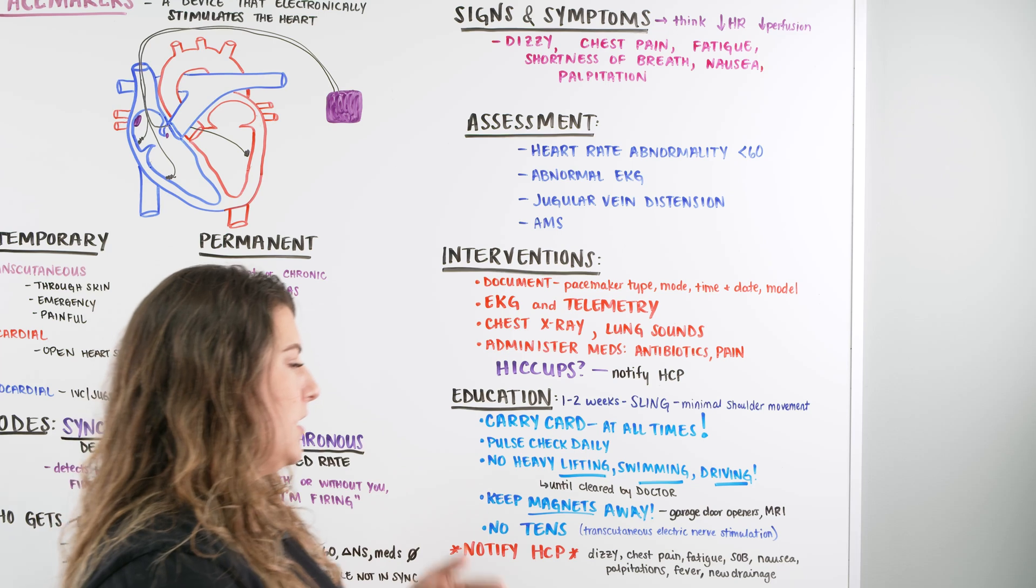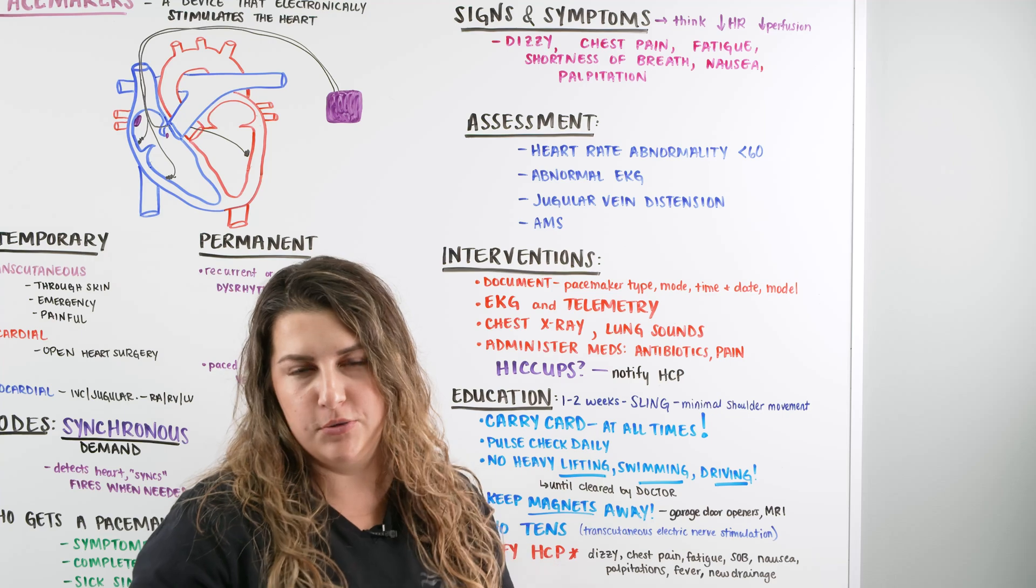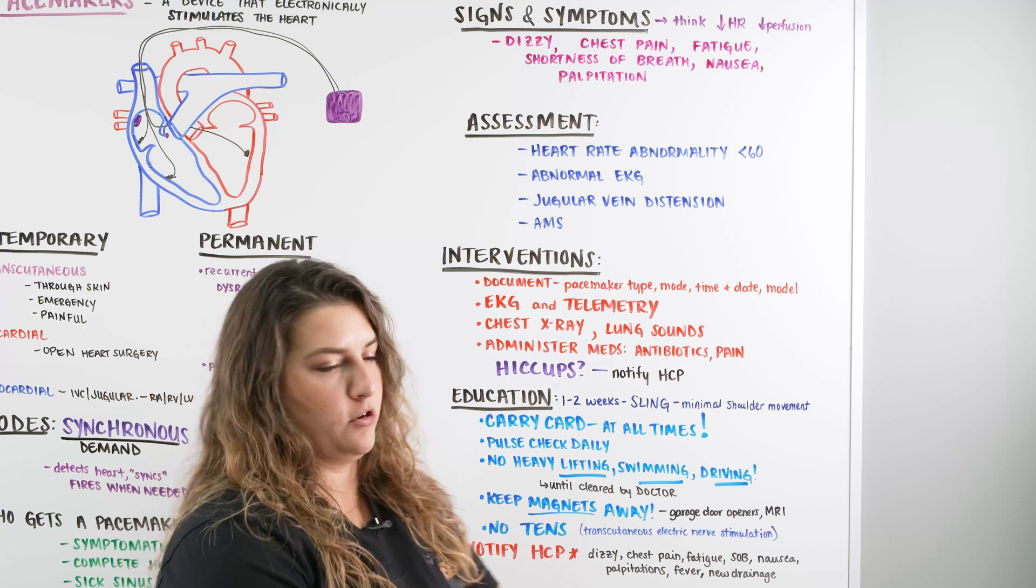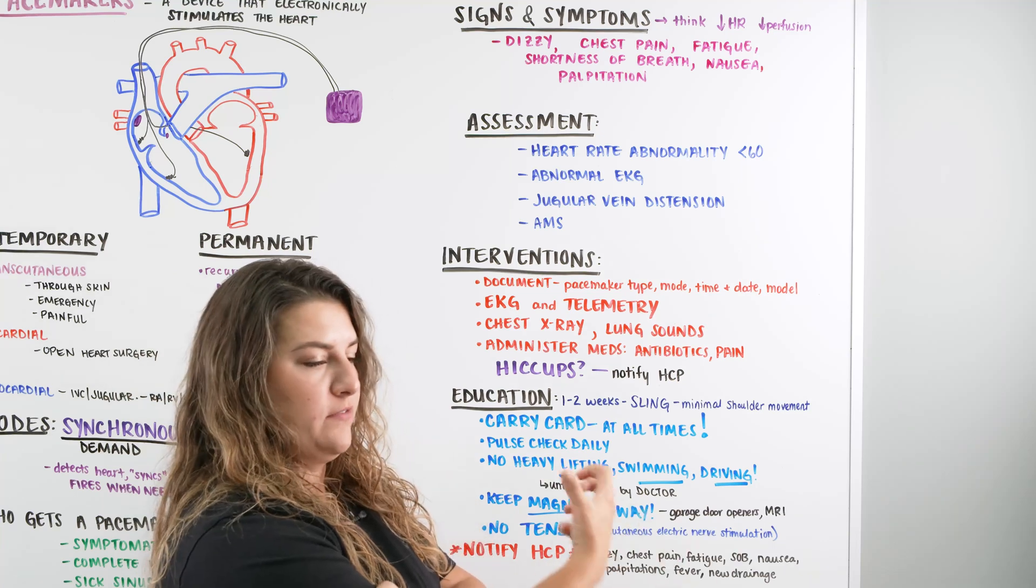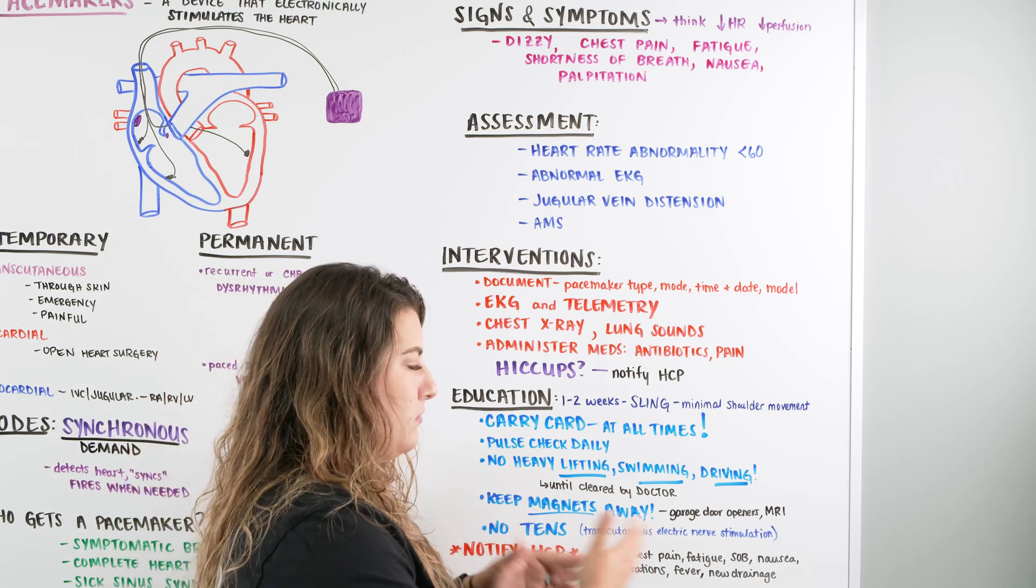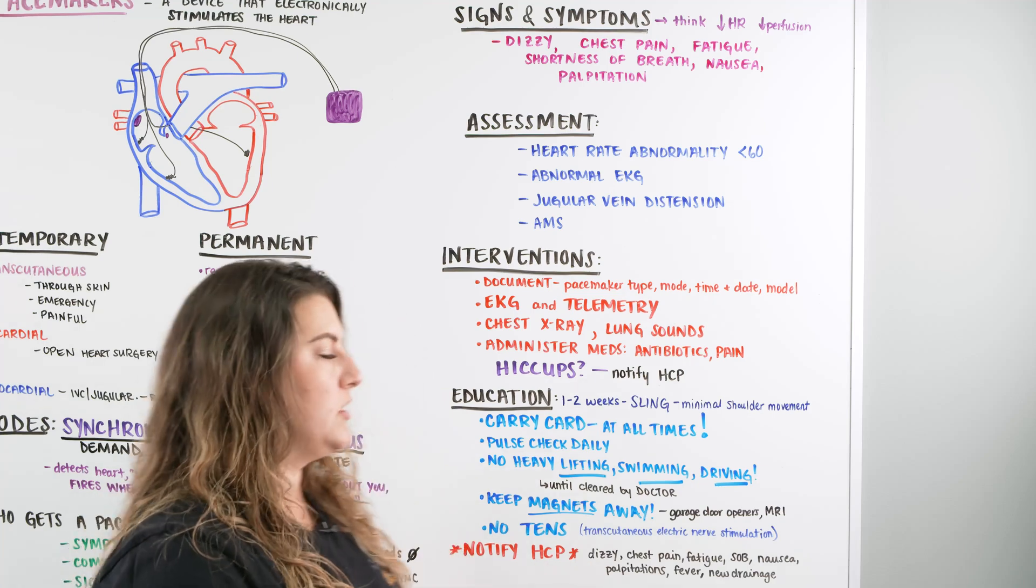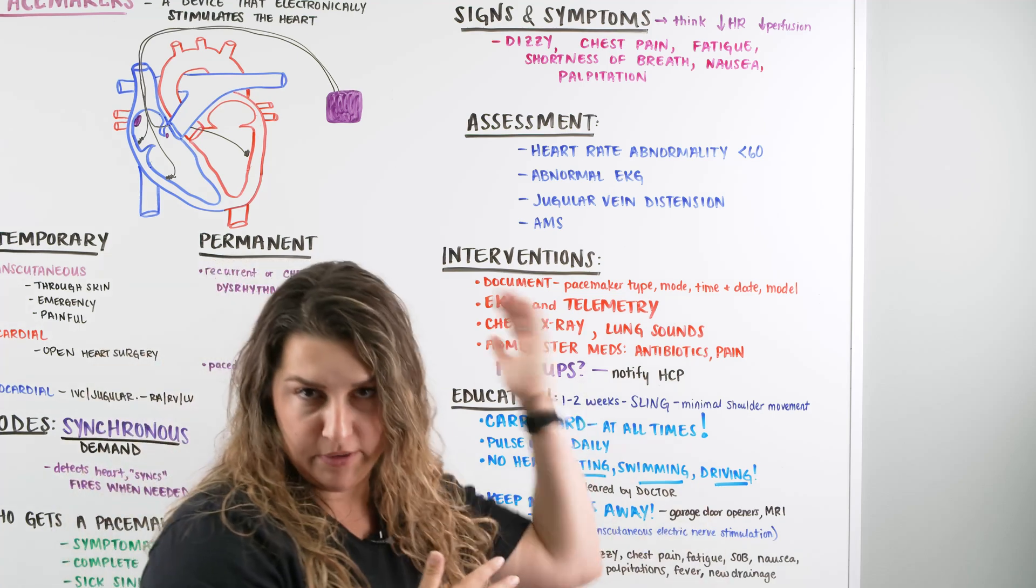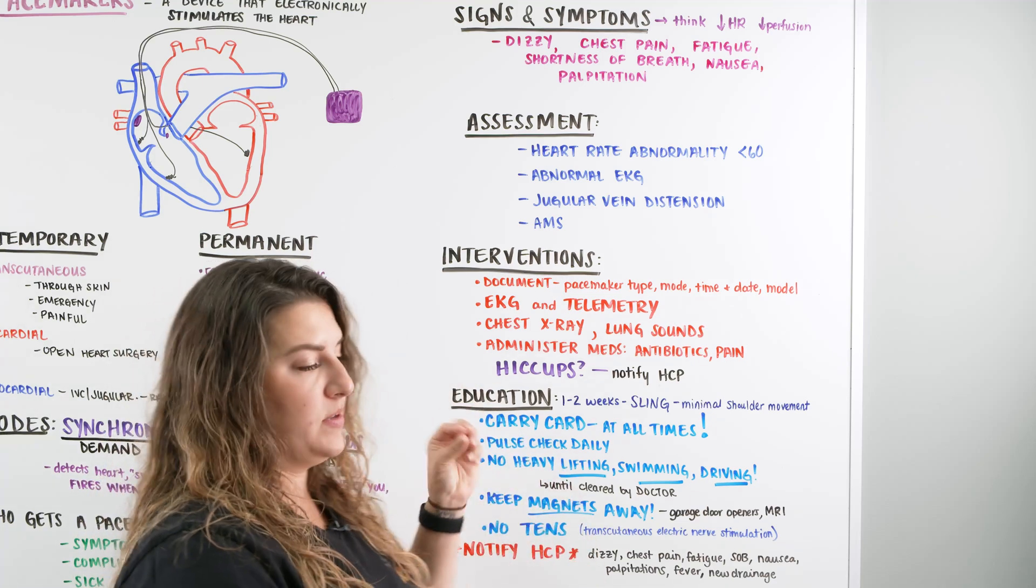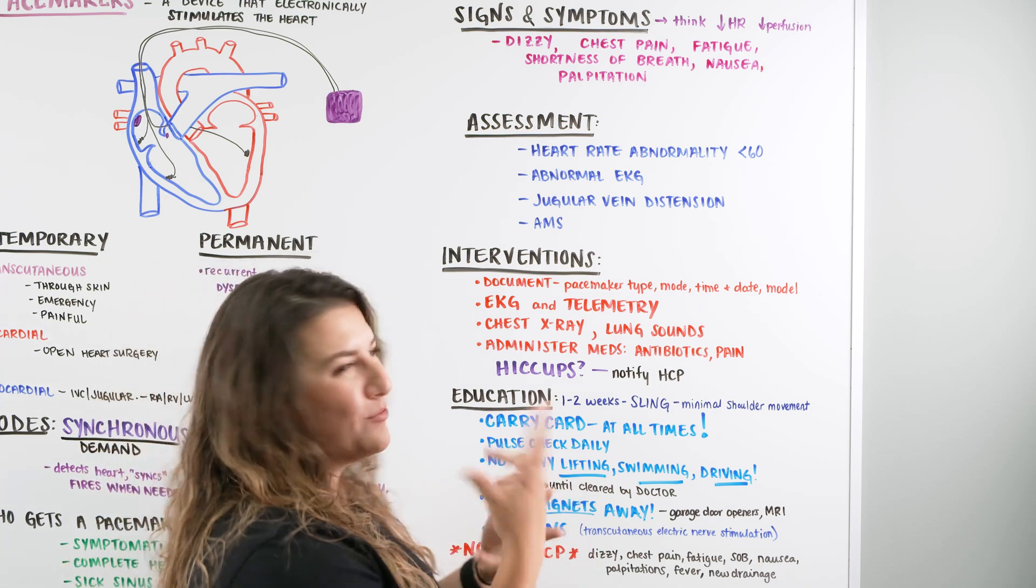Also, no TENS machines. If you don't know what those are, those are the transcutaneous electric nerve stimulation machines that some people get to help with their muscles. They put them on your back to help relieve tension. The TENS machine is not good because it is sending electrical stimulation. And what is the pacemaker doing? It's sending electrical stimulation. So if you have a pacemaker here and you slap a TENS pad on the back of your shoulders to get some relief, that could be sending signals and cause issues with the mode and function of our pacemaker. So no TENS machines if you have a pacemaker.